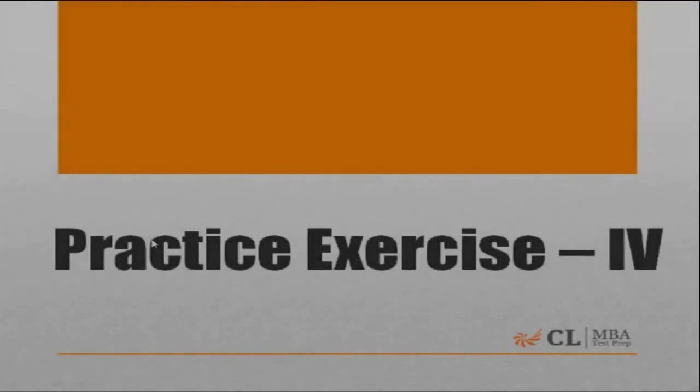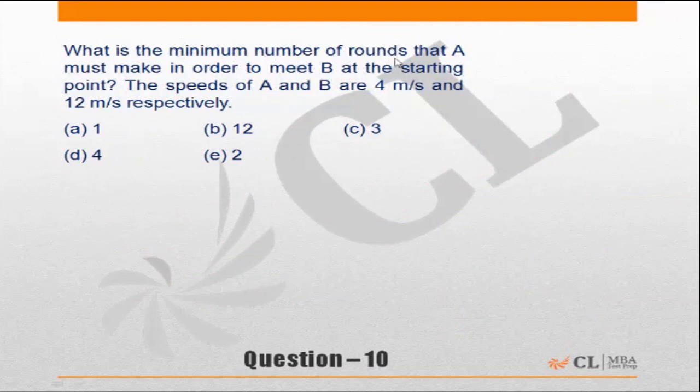Practice exercise 4 of time, speed, distance fundabook. Let's go to question 10. What is the minimum number of rounds that A must take in order to meet B at the starting point? The speeds of A and B are 4 and 12 meters per second respectively.